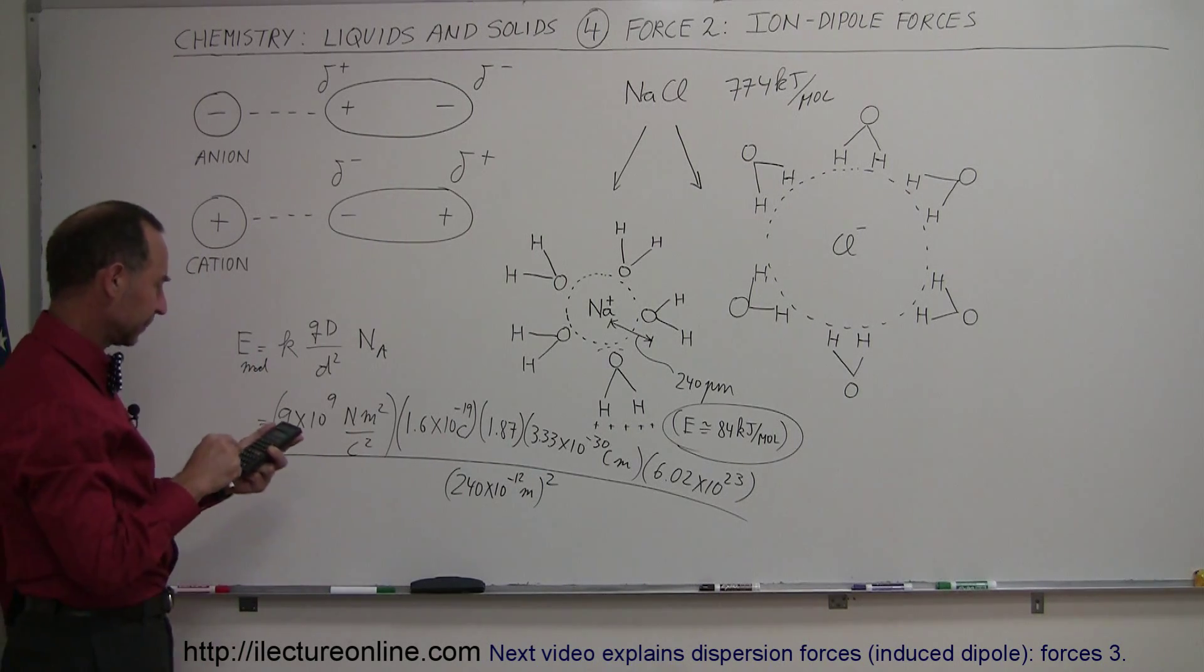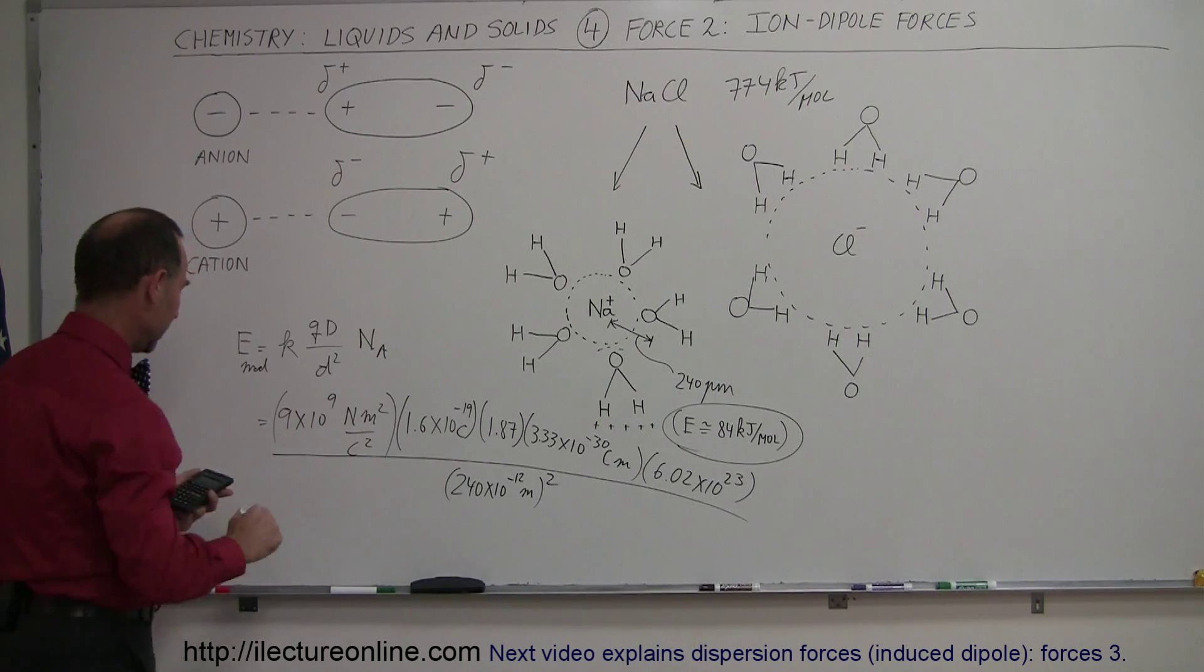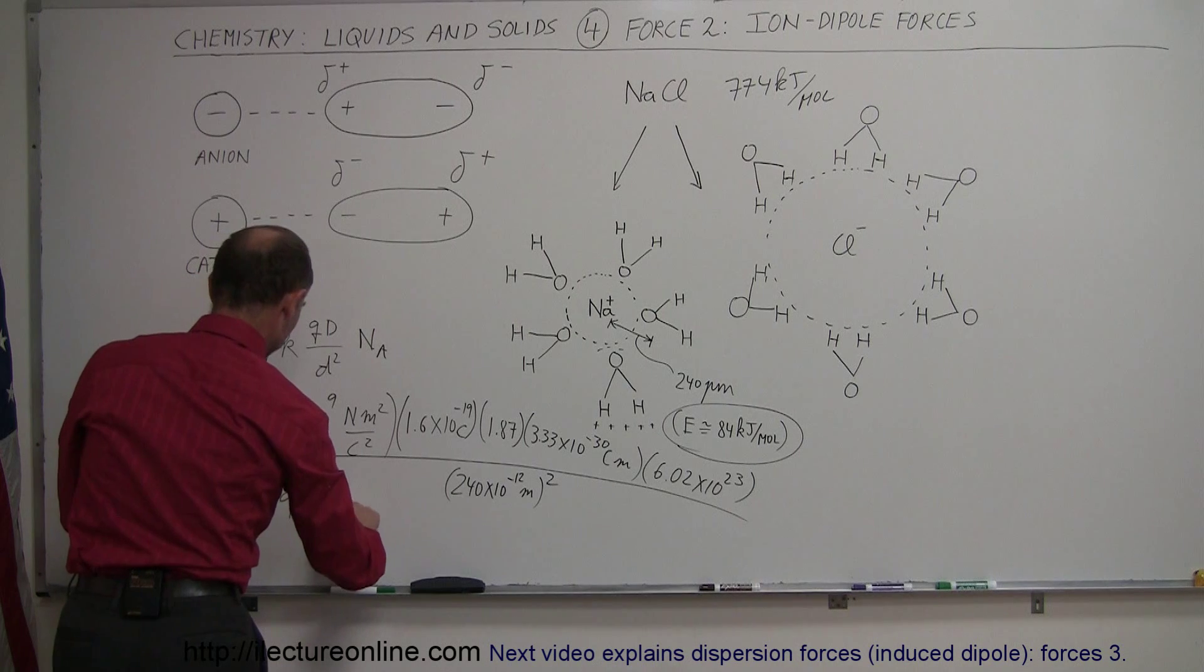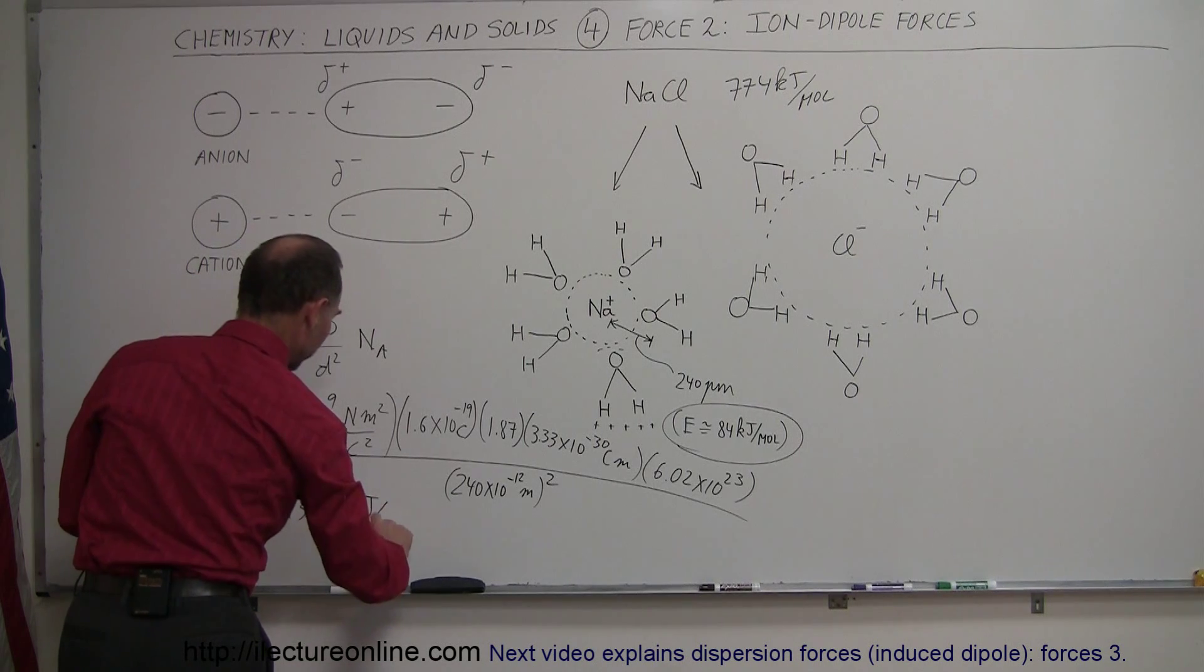So we have 9e9 times 1.6e-19 times 1.87 times 3.33e-30 times 6.02e23, divided by 240e-12 squared equals, and that's equal to 93,700 joules per mole.